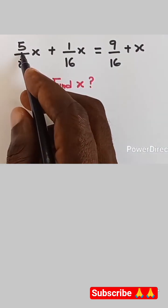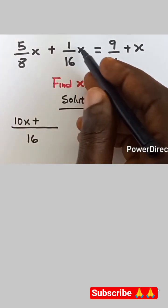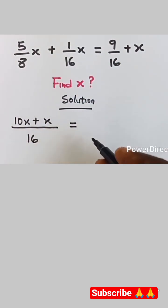How many 8 can we see in 16? It is 2. 2 times 5x gives us 10x, plus how many 16 can we see in 16? It's 1. 1 times 1x gives us x equals...